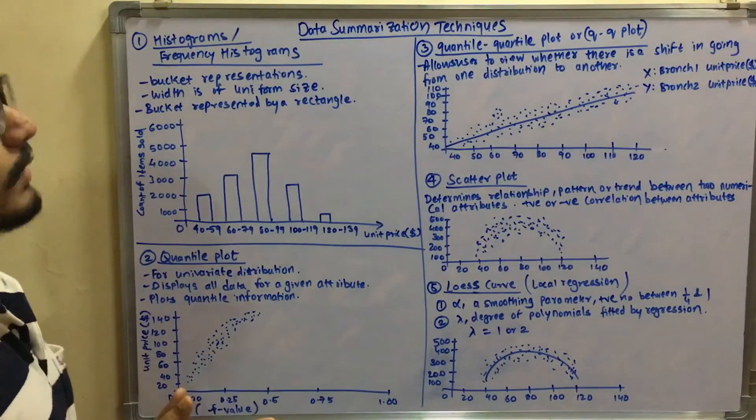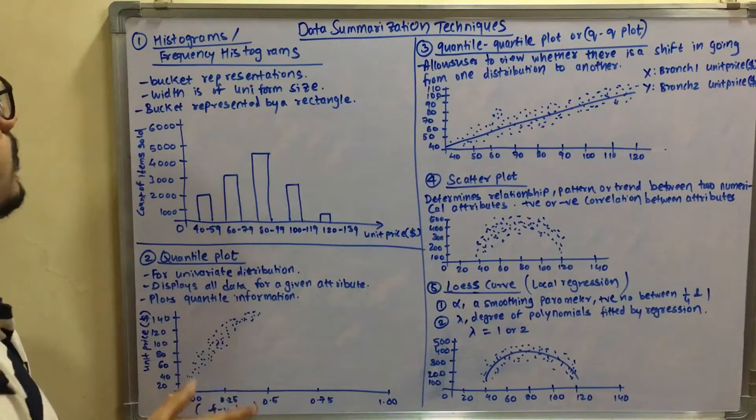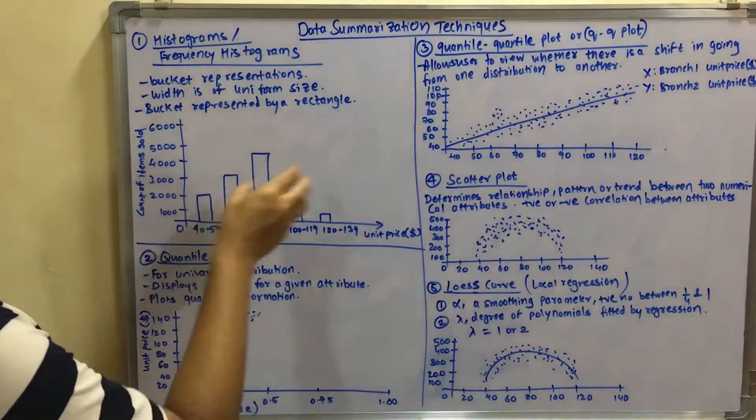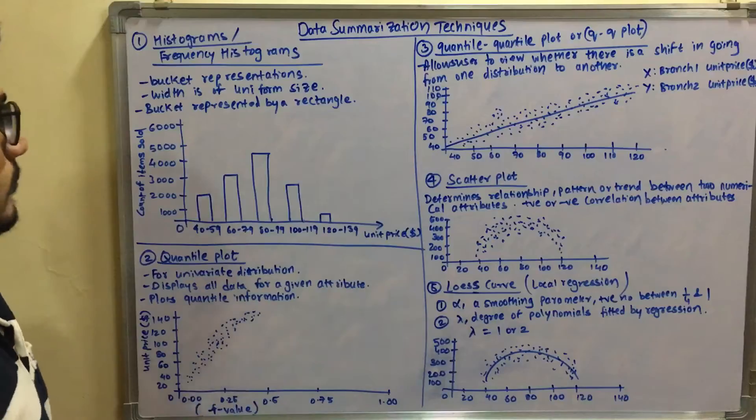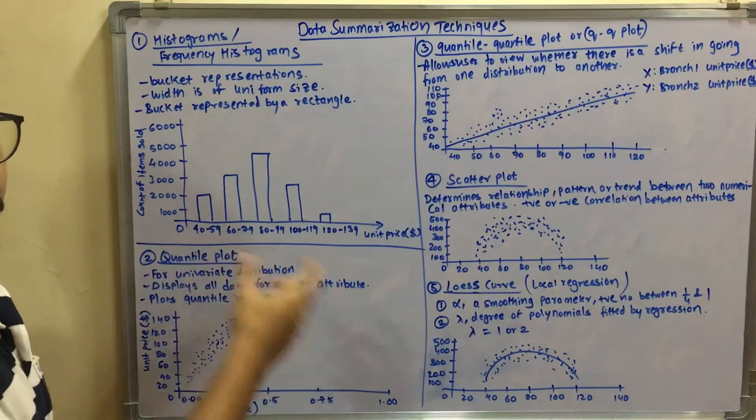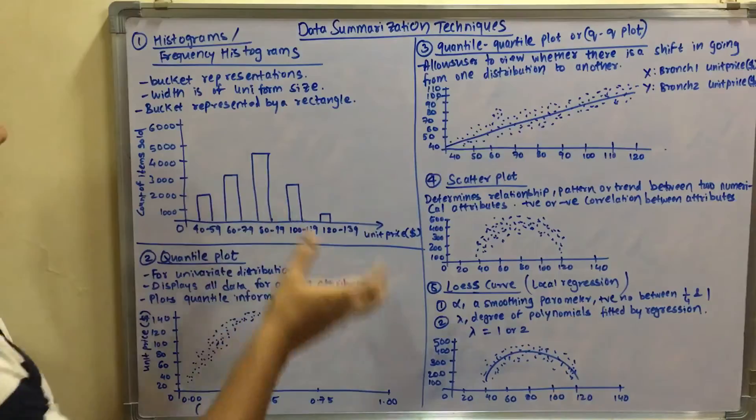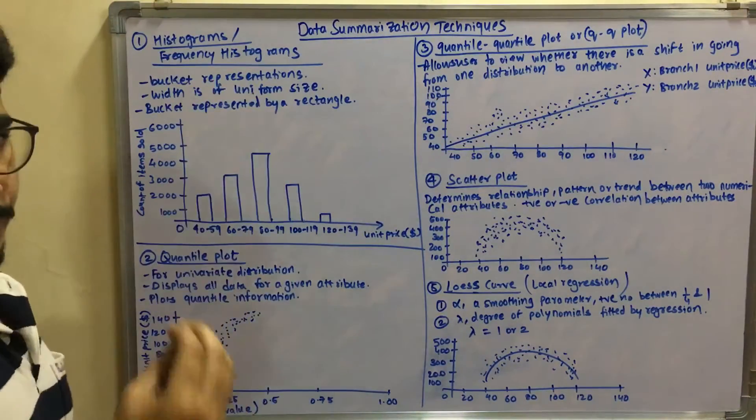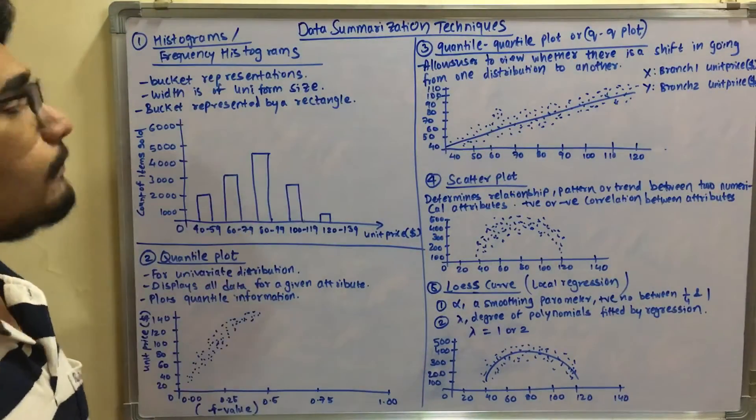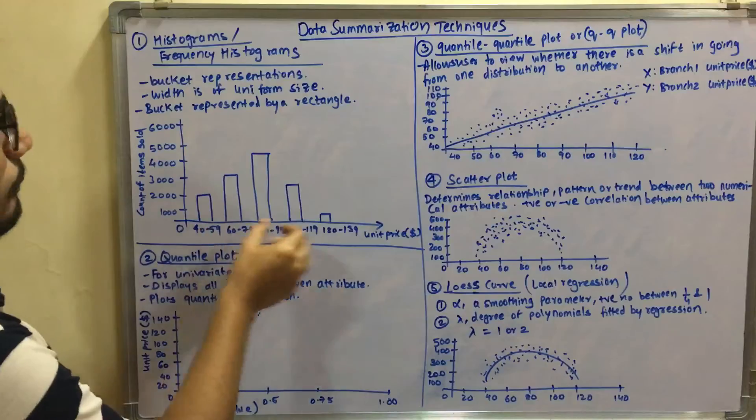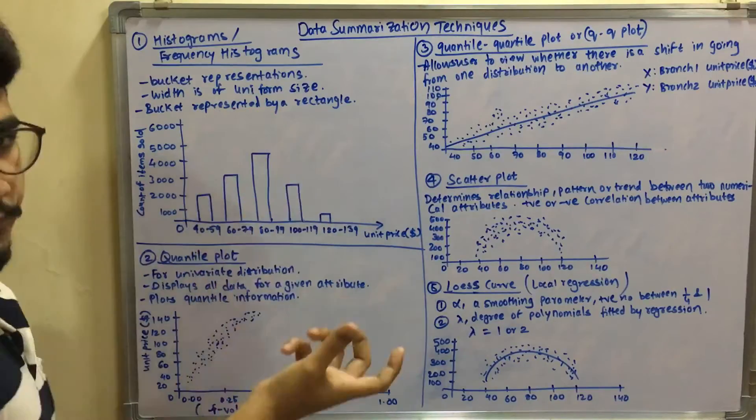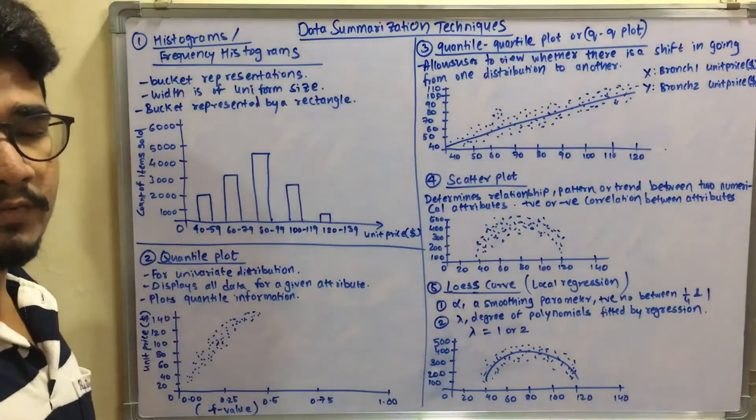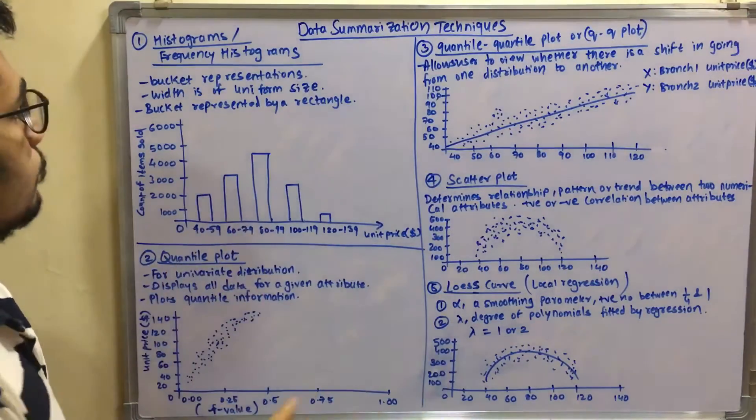First of all, to represent or summarize the data, we have the basic histogram or frequency histograms from mathematics. Like we have this kind of graphs where different widths and intervals will be given. There will be bucket kind of representations in histograms and the width of each bucket is of uniform size, like there will be one particular width or kind of particular median interval. So based on that, we'll be plotting this kind of graphs.